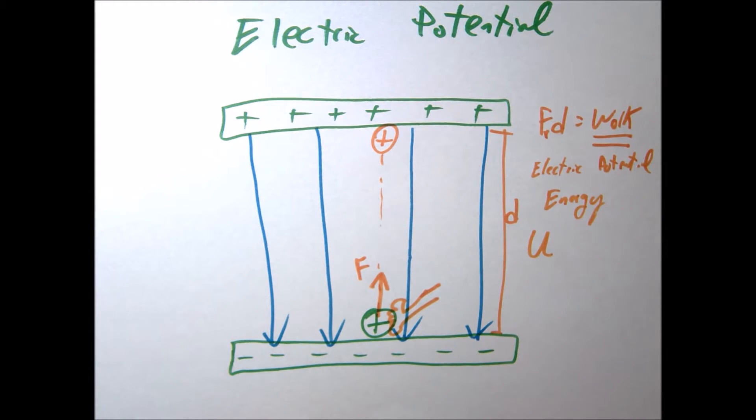And the symbol we're going to use for electric potential energy is simply going to be U. Remember, that's potential energy generic. And then we'll subscript that with an E. So we say that charge now has some electric potential energy. Well, how much did it have? Well, it had to be equal to the work that I did. And remember, the work I did is the force times the distance.